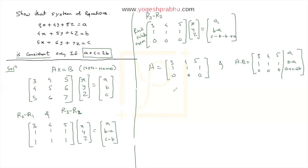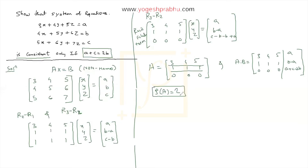From matrix A, the rank of A is clearly 2, since the rank is the number of non-zero rows. The first row is non-zero and the second row is non-zero, so rank of A equals 2.